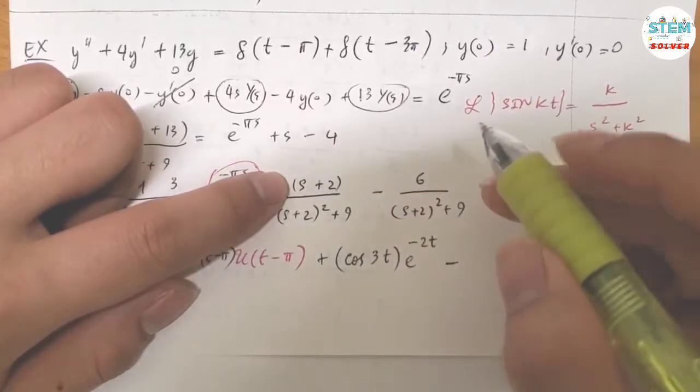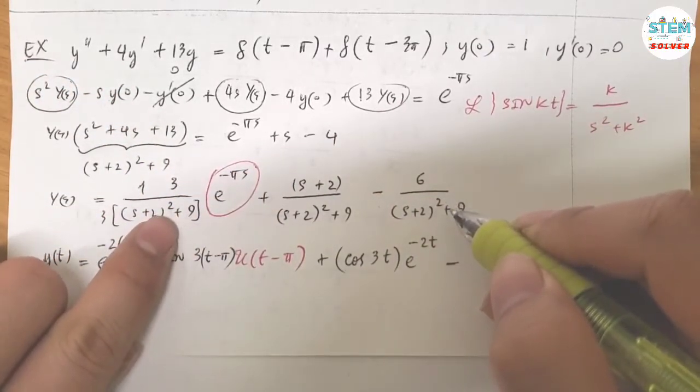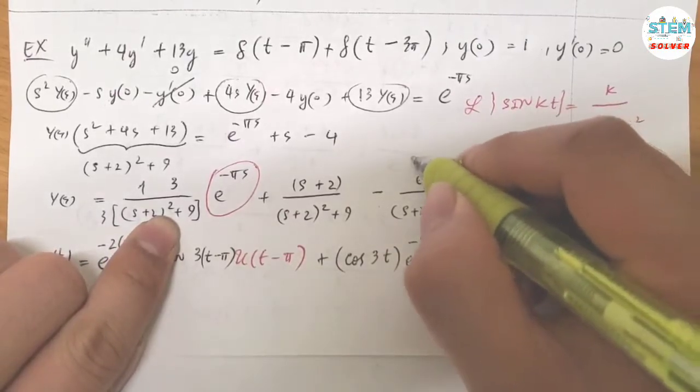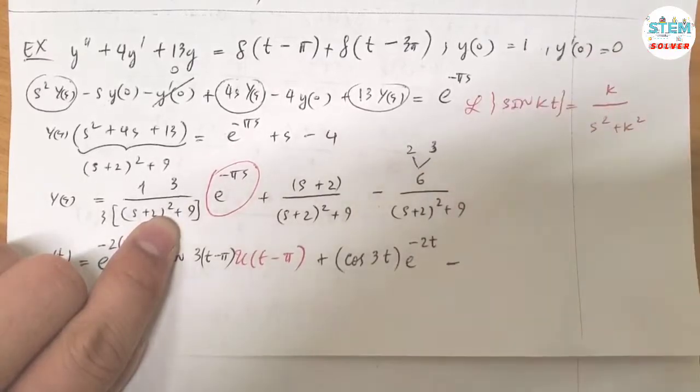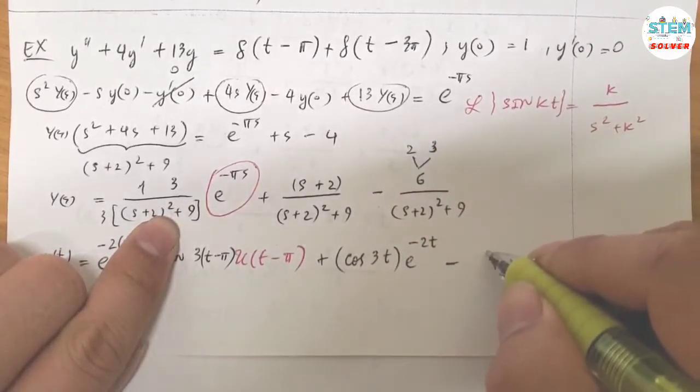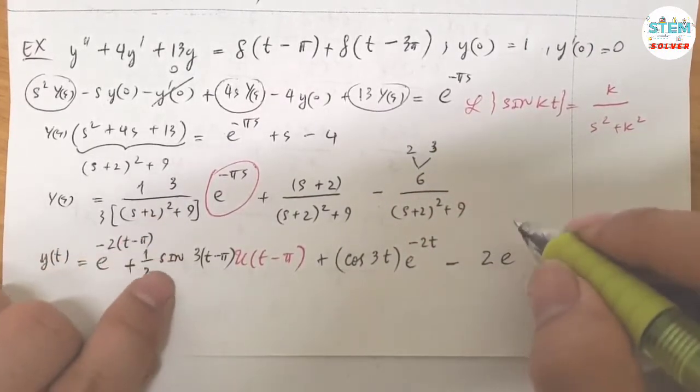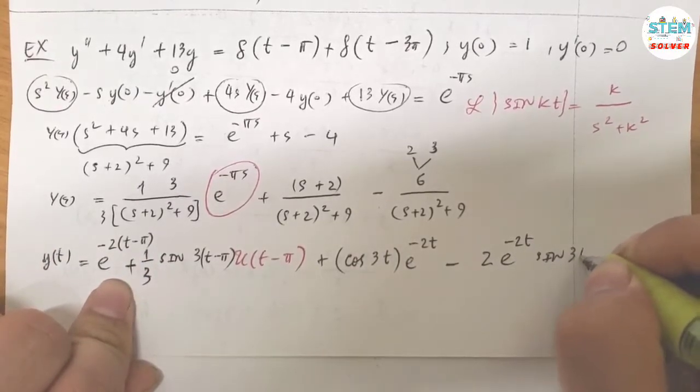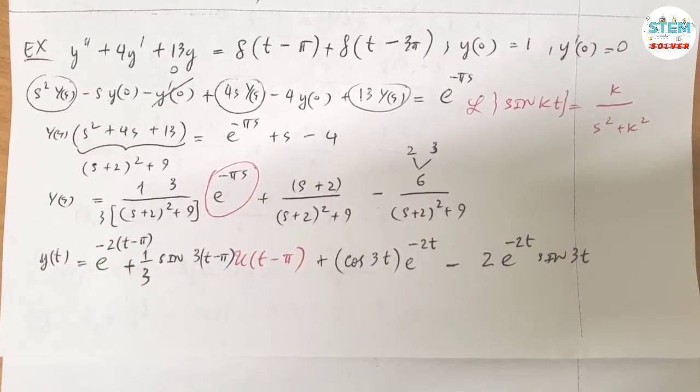And last one. Again, this one, similar to this one over here, you need to have the 3. So you can break this out to 2 times 3, right? And you need 3, so you have 2 e to the negative 2T times sine 3T. So that is your final solution.